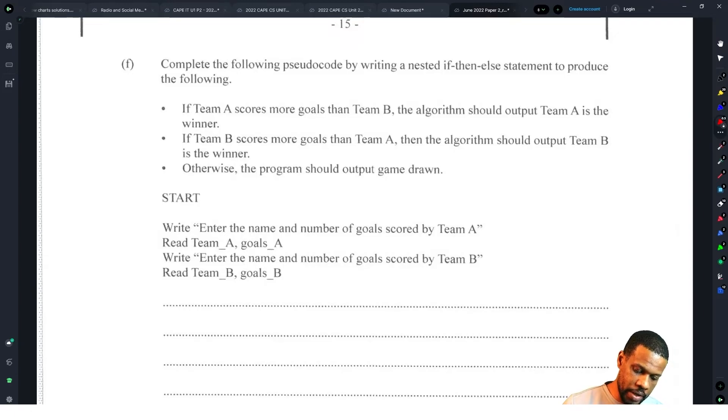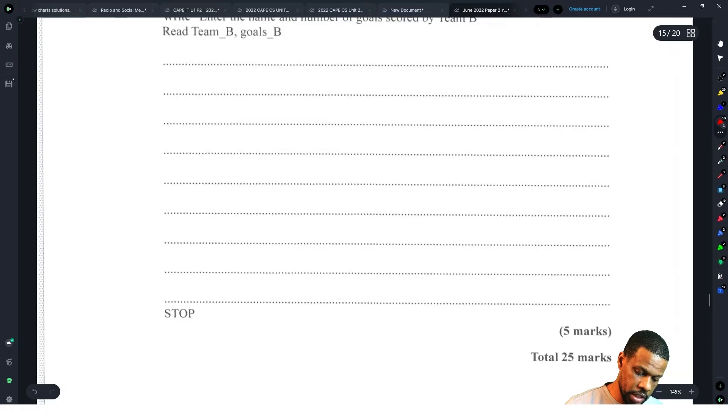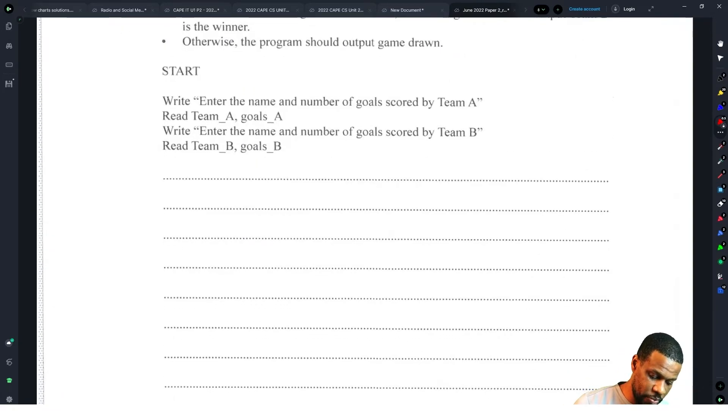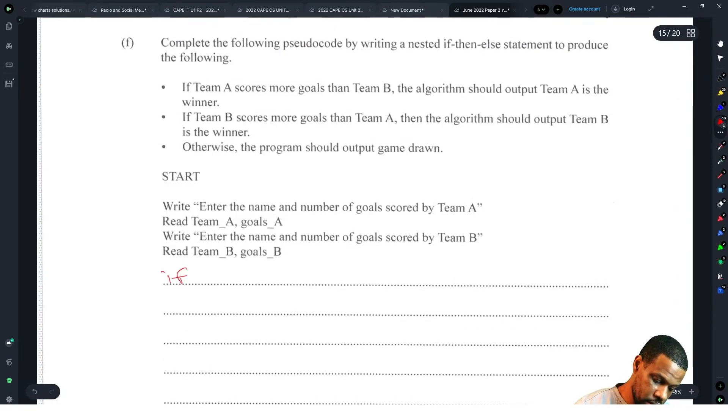Complete the following pseudocode by writing a nested if-then-else statement to produce the following: if team A scores more goals than team B the algorithm should output team A is the winner. If team B scores more goals than team A then the algorithm should output team B is the winner, otherwise the program should output game drawn. So if goals_A greater than goals_B then output team A is the winner.